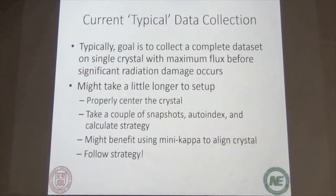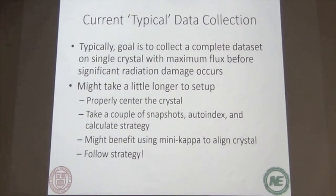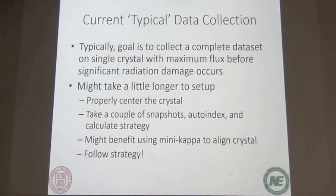As mentioned before, it might also benefit from using a mini kappa. For anomalous data, if you have at least a two-fold axis along the crystal goniometer axis, you can get the Bijvoet pairs in the same frame — that way you don't have to worry about time differences because they're on the same frame. Most people also use mini kappa if you've got a long axis — you want to get that long axis parallel or nearly parallel to the spindle axis. You don't want it exactly parallel because you'd have a huge blind region, but you want to get it slightly off.